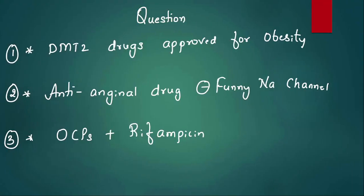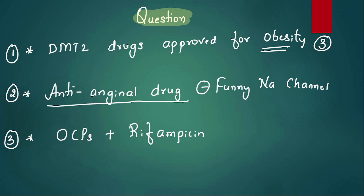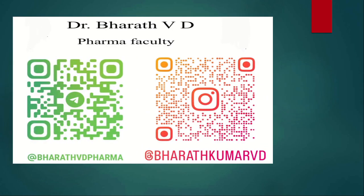Three questions for you: Which diabetic drugs are also approved for obesity? Name an anti-anginal drug that inhibits the funny sodium channel. What happens if you combine OCPs with rifampicin? Please answer these. Hope you found the content useful — like, subscribe, and share with your friends.